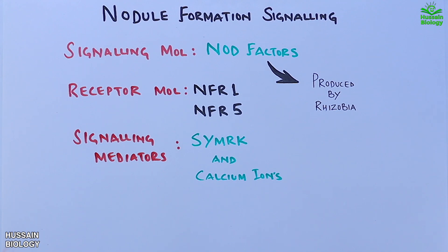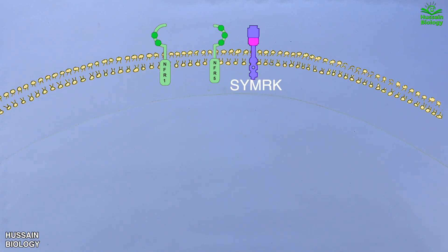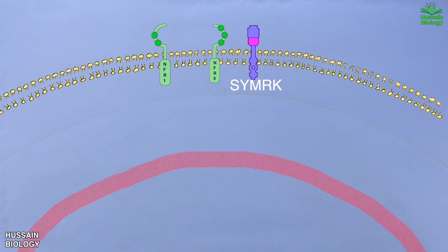In this diagram we have the plasma membrane with NFR1 and NFR5 in the form of receptor monomers. We also have SYMRK — the Symbiosis Receptor-Like Kinase protein — on the membrane, and on the inside we have the nucleus.